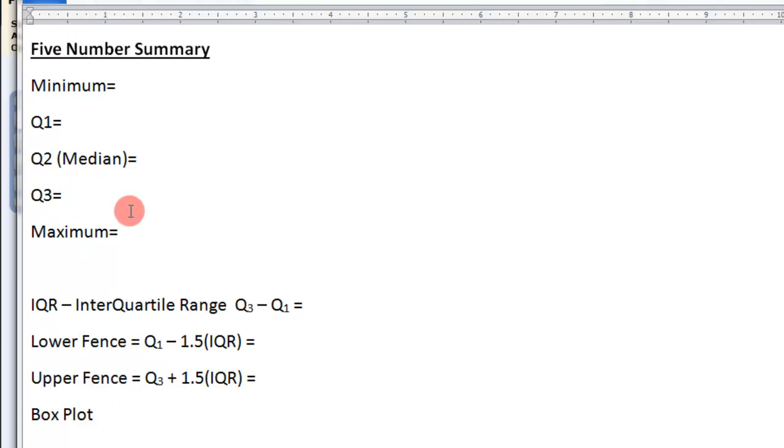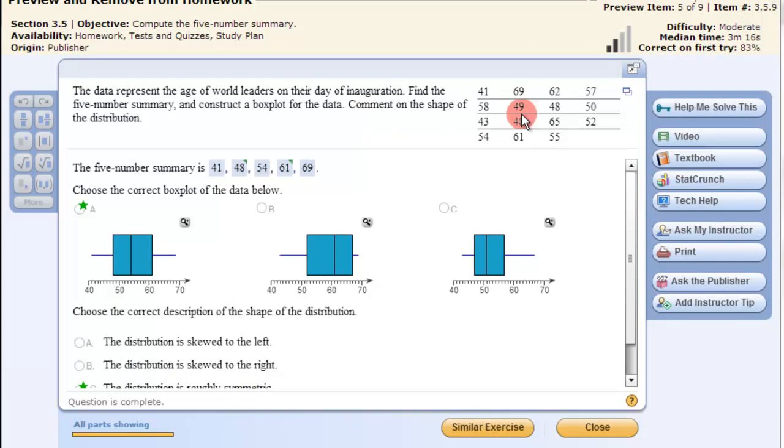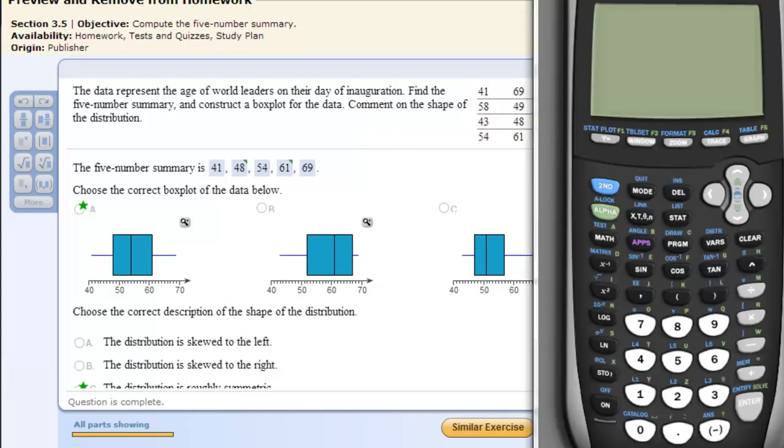So you may only need some of this for what you're working on, but I'll show you how to do all of it. Here's our information, our data. The data needs to be put into list 1 on the calculator. So I turn the calculator on, go to STAT and EDIT. Enter all this data here into the calculator. It has all been done.